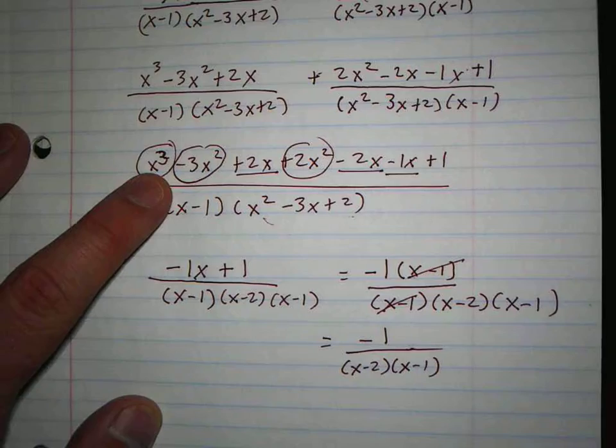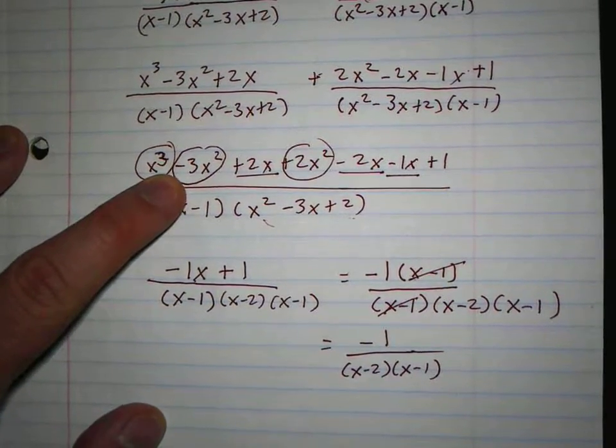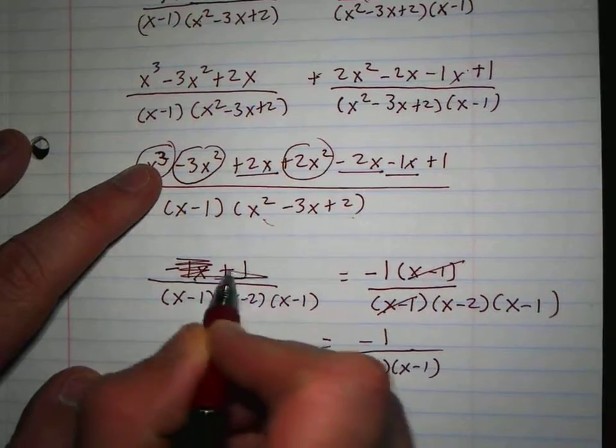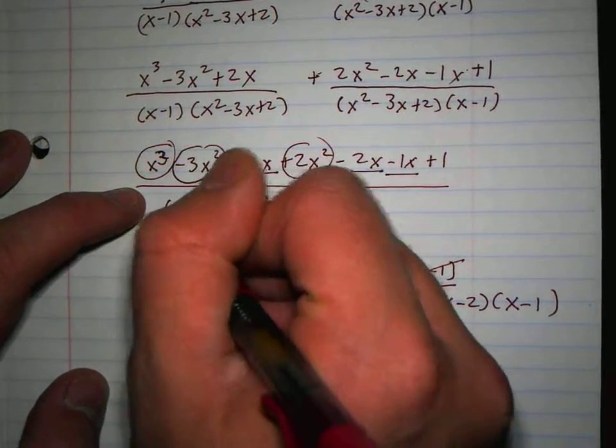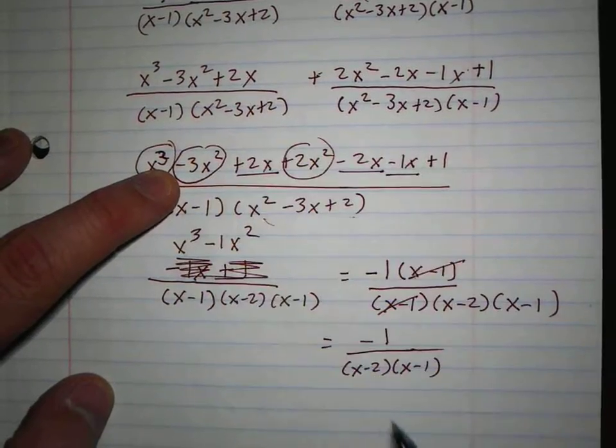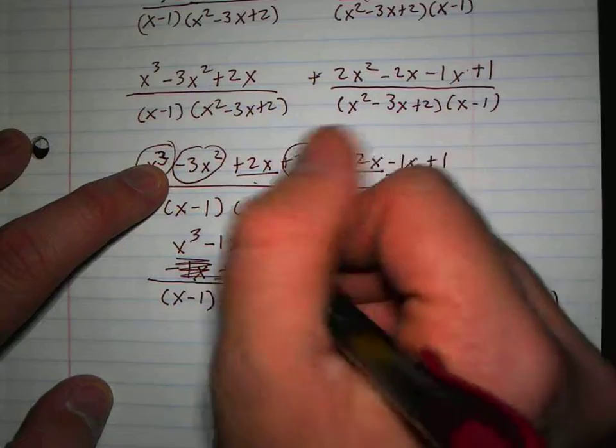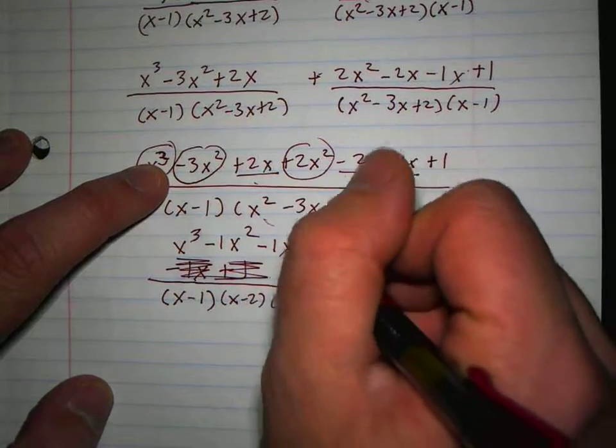And so I get x cubed, and then those don't cancel after all, do they? It would be x cubed, that would be minus 1x squared, minus 1x, plus 1.